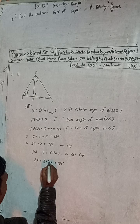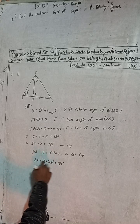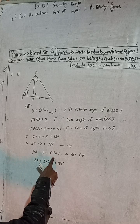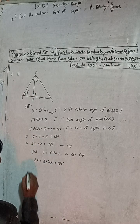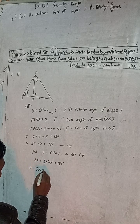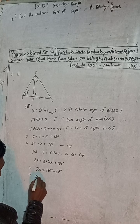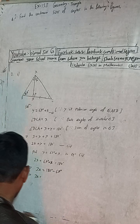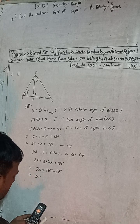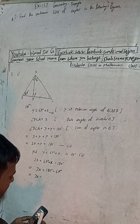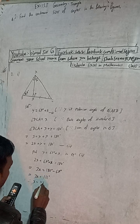Substituting: 2x plus 69 plus x equals 180 degrees. Brackets are optional here since there is a plus sign. This gives 3x equals 180 minus 69, so 3x equals 111 degrees. Therefore x equals 111 divided by 3, which gives x equals 37 degrees.